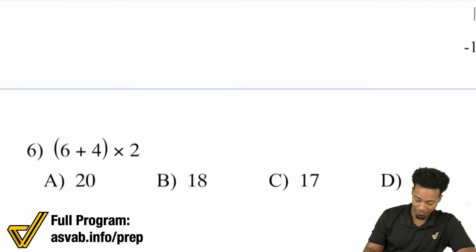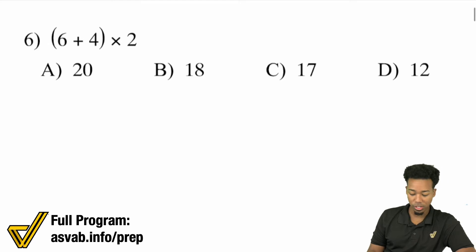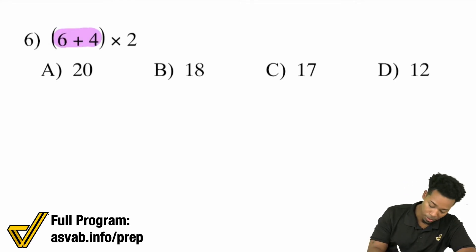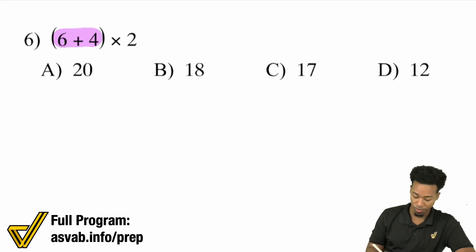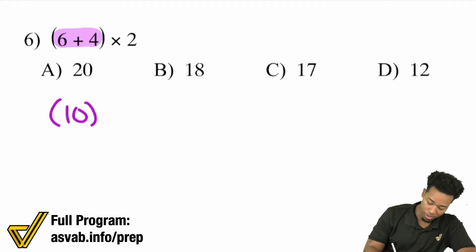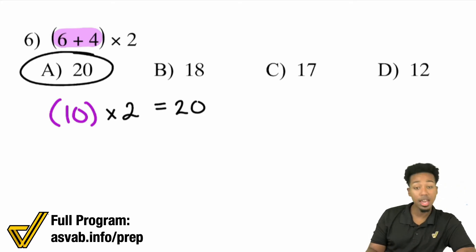Number 6: We have (6 plus 4) all multiplied by 2. In the parentheses, you have 6 plus 4, so we'll take care of that — that's going to be 10. Then from there, we multiply by 2, and that gives us 20. That's going to be A.